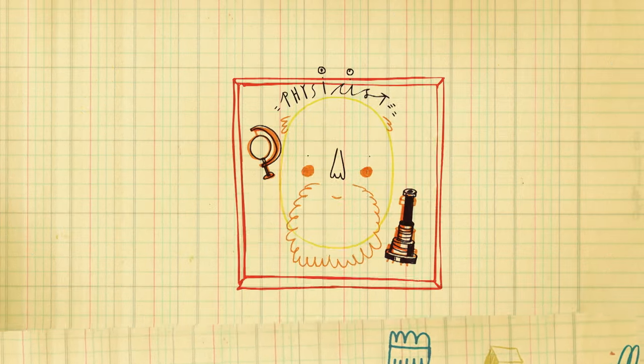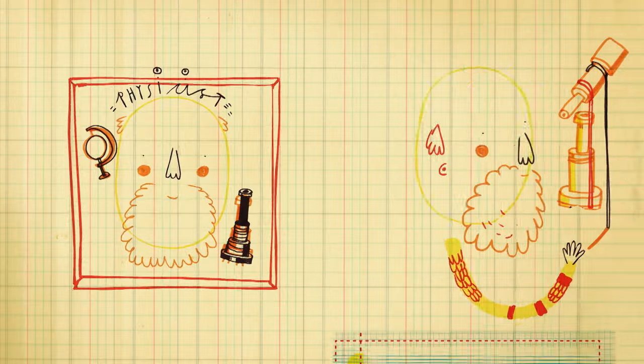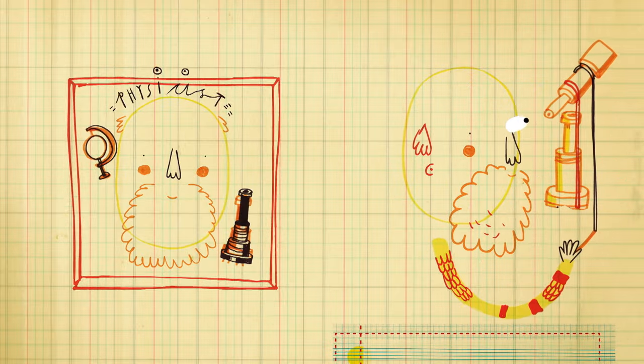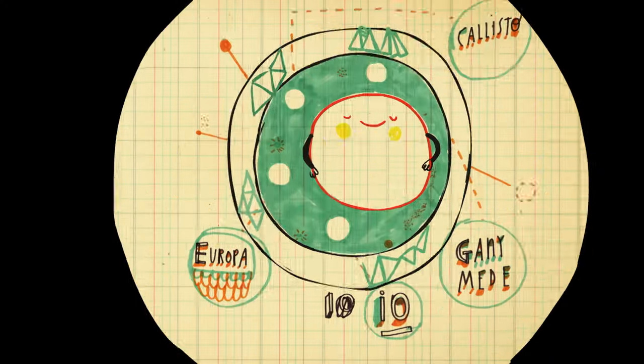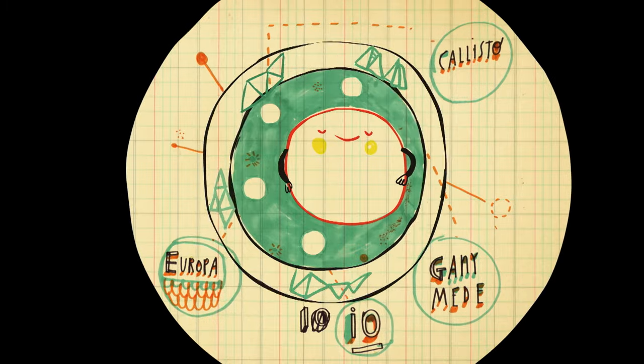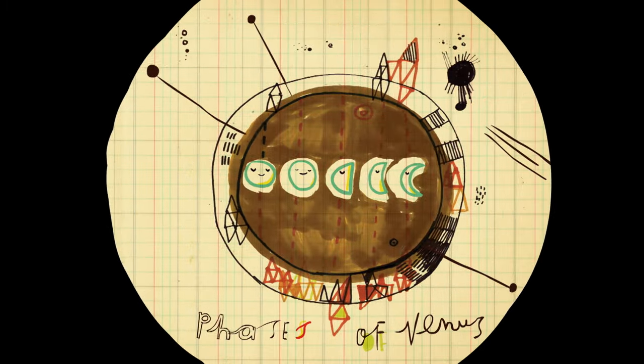400 years ago, Italian genius Galileo pointed a telescope at the sky for the first time. He saw mighty Jupiter and its host of smaller moons. He also saw the difference between night and day on Venus.